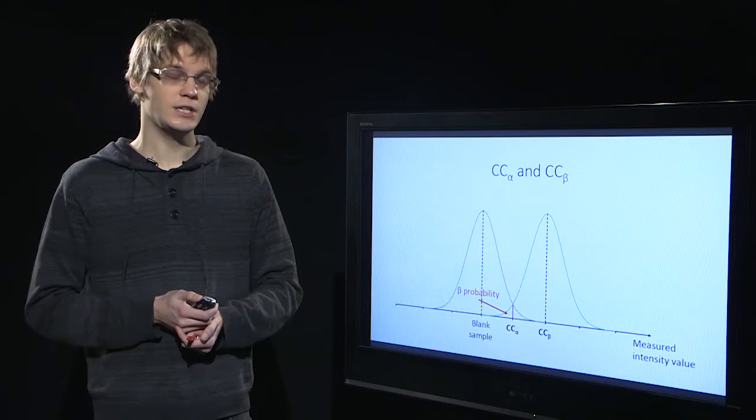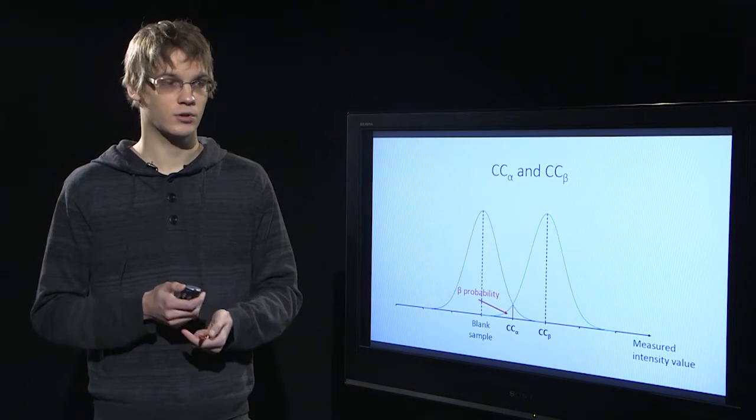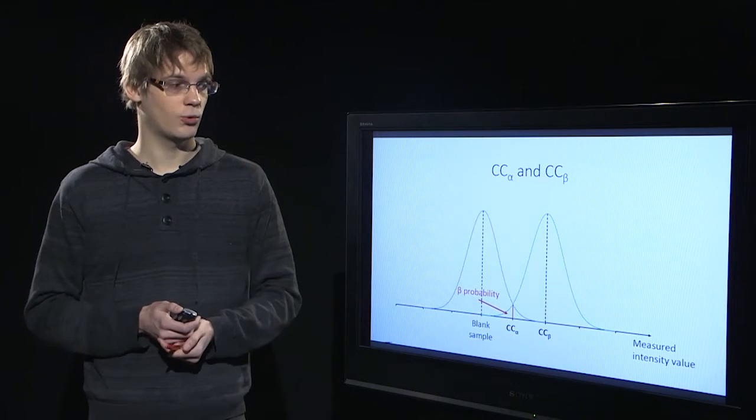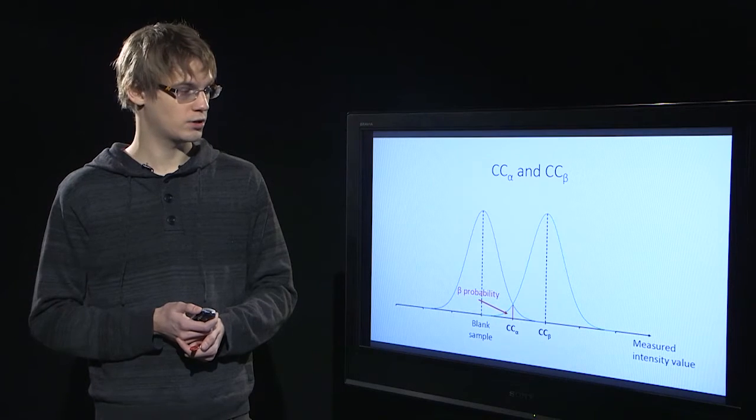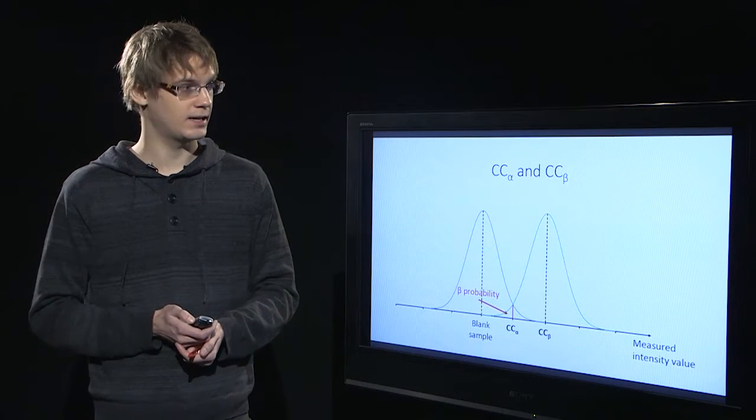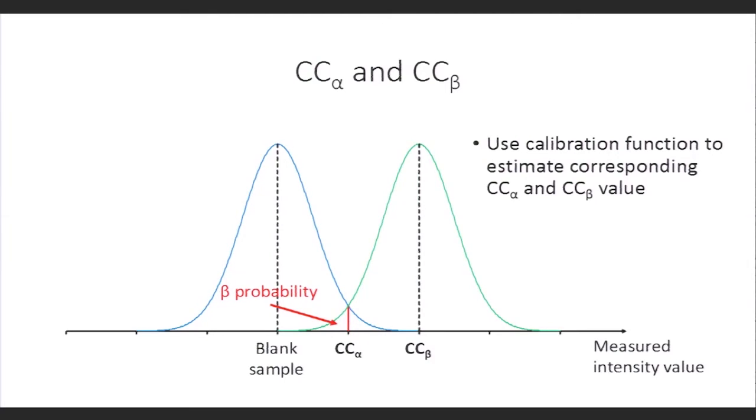Now the definitions state that CCα and CCβ are concentrations; however, here we talk about the intensity values. We can use a calibration function to actually estimate the corresponding concentration values for the decision limit and detection capability that we can find in the intensity scale.